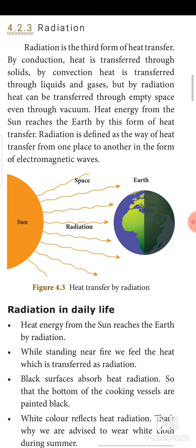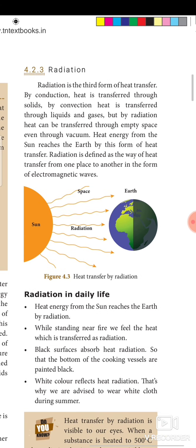The third form of heat transfer is radiation. Unlike conduction and convection, radiation does not need a medium. By conduction, heat is transferred through solids; by convection, heat is transferred through liquids and gases; but by radiation, heat can be transferred through empty space — even through vacuum. Heat energy from the sun reaches the earth by this form of heat transfer. Radiation is defined as the way of heat transfer from one place to another in the form of electromagnetic waves, with no need for a medium.